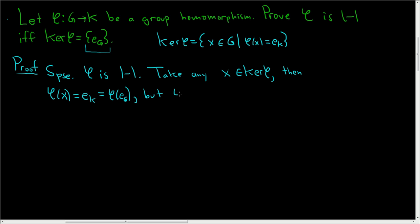But φ is 1-to-1, so x is equal to the identity element in G. So we took an x in the kernel and showed that it was equal to the identity. So every single x is the identity.